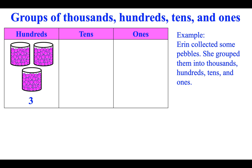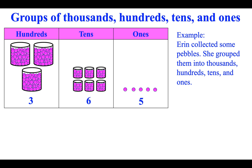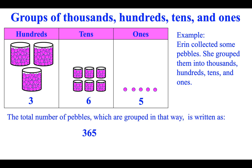She has three hundreds, six tens, and five ones. The total number of pebbles, which are grouped in that way, is written as three, six, five. It is read three hundred sixty-five.